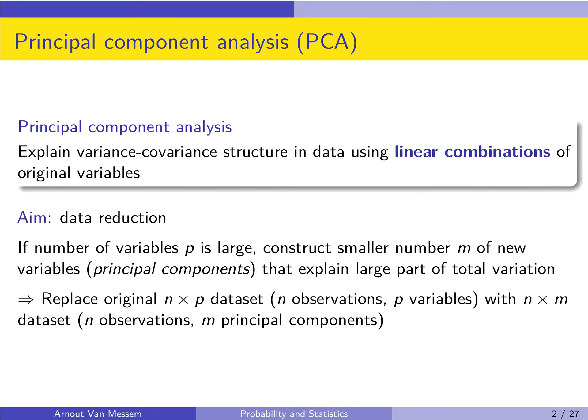Very generally put, principal component analysis will try to explain the variance-covariance structure in a dataset by using linear combinations of the original variables. Assume that we have a dataset with p variables. This dataset has a certain variance-covariance structure, which is defined by those variables. If the number of variables p is large, we might be confronted with a number of problems.